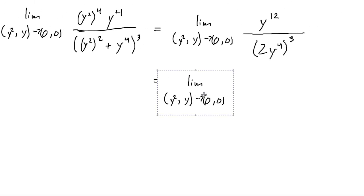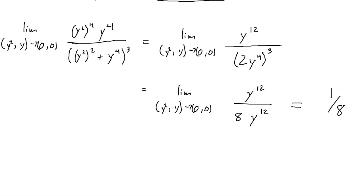This is equal to y to the twelfth over, two to the third is eight, y to the twelfth. And so, the y's to the twelfth cancel. And the limit is equal to one eighth.